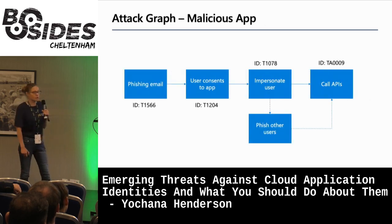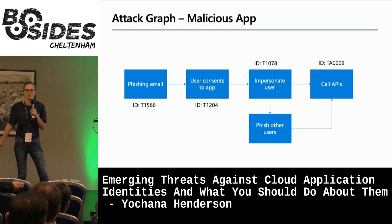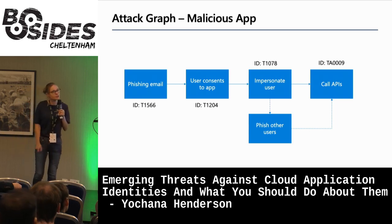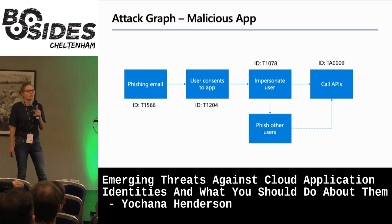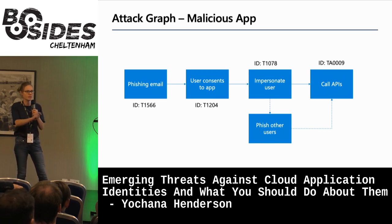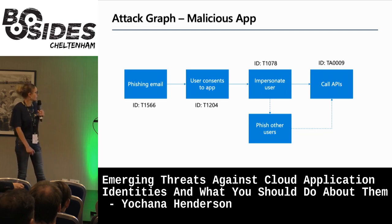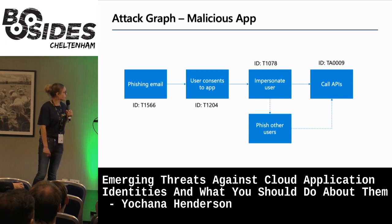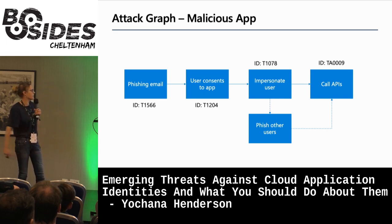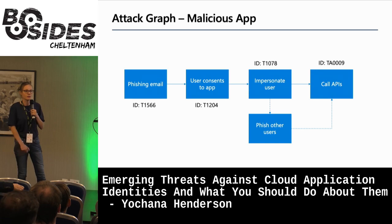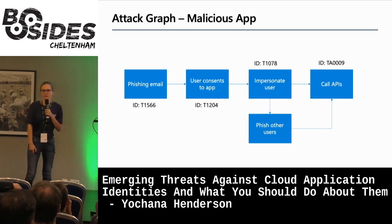For a malicious application - one that serves absolutely no purpose but to be malicious - this normally starts with a phishing email where the user consents to an app. These are consent-based attacks, where a user clicks and says yes, the attacker can access all their emails and impersonate them as a user. The app then impersonates the user and is also used to phish other users, sending emails as the compromised user with the 'send as me' permission.